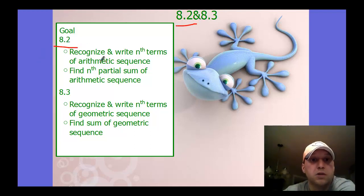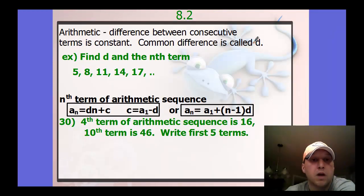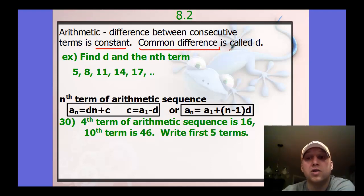Our goals is basically looking at arithmetic sequences and then the summation of those as well. Arithmetic is where the difference between consecutive terms is constant, or the common difference is kind of the rate of change. We call it D when we're looking at arithmetic sequences. Think of it as M, the slope as well, because it's a constant rate of change.